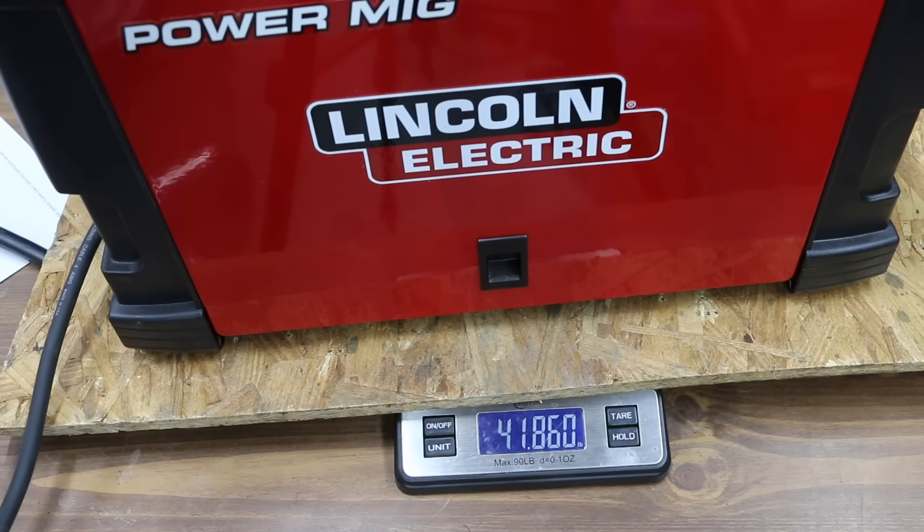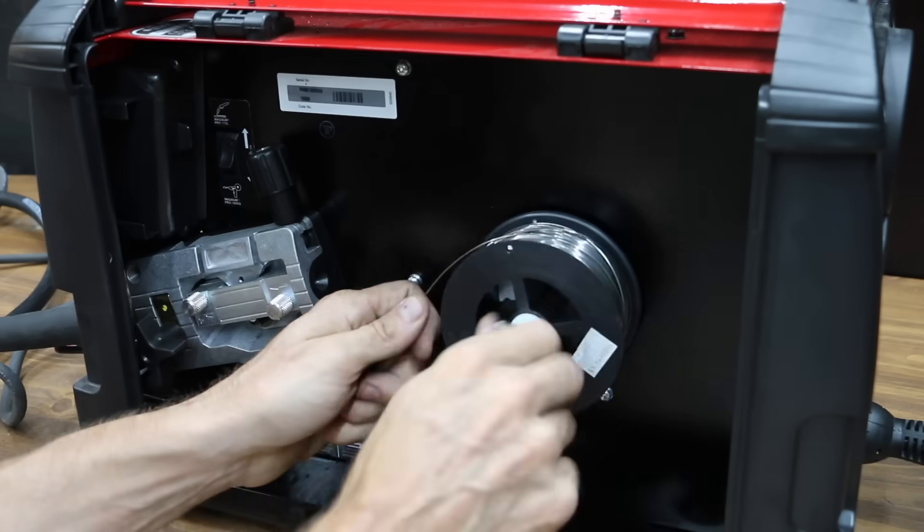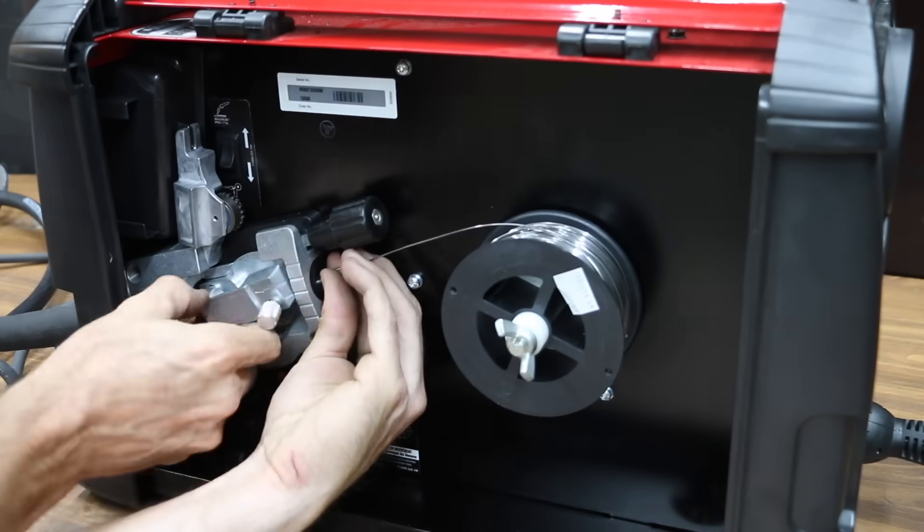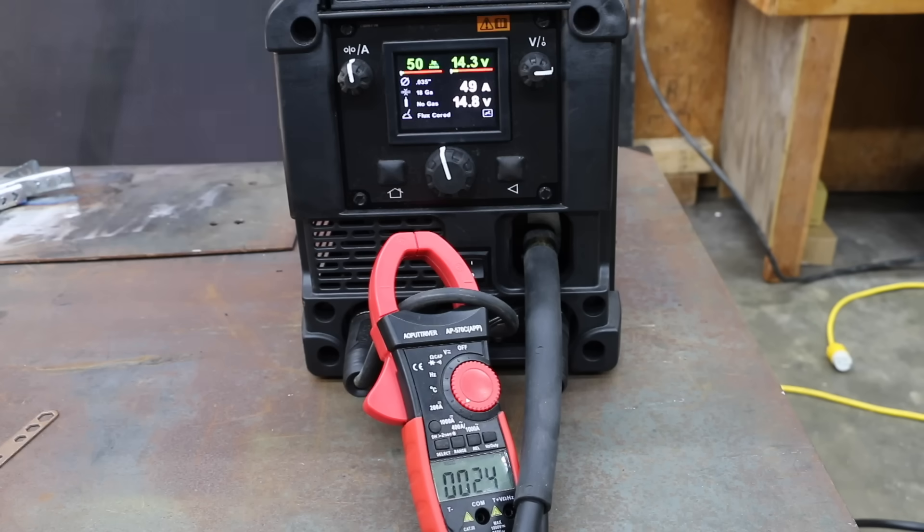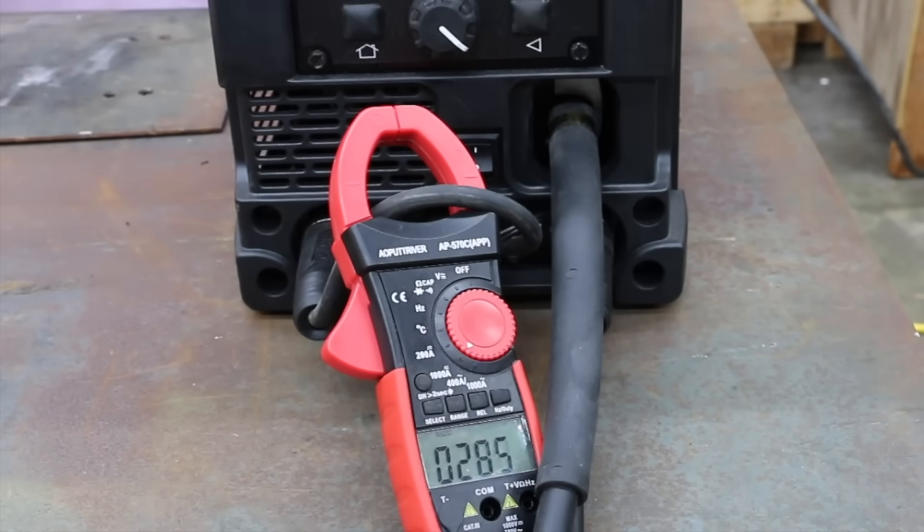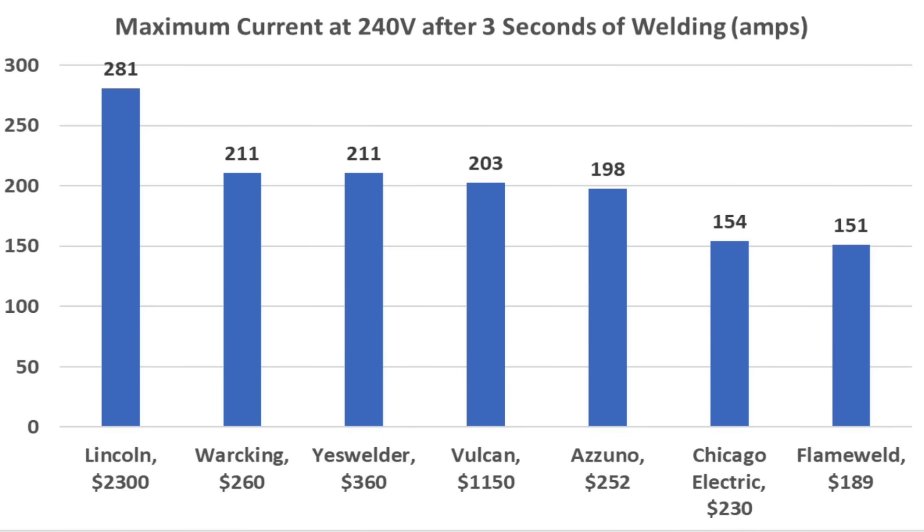Without a spool of wire on board, the Lincoln weighs just under 42 pounds. Just like the Vulcan 220, the Lincoln is a larger welder with plenty of space for installing the wire. Definitely an easy process to install the wire into the wire feed mechanism. And it's 21 to 49 amps of current on the lowest setting with the Lincoln. 281 to 285 amps of current on the highest setting. Later in the video, we'll test the welders out on some very thin 20-gauge sheet metal. On the highest setting, the Lincoln makes the most current at 281 amps after 3 seconds of welding. The War King and the Yes Welder tied for second at 211 and Vulcan 203 amps.